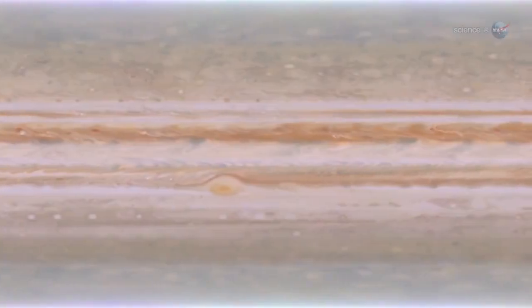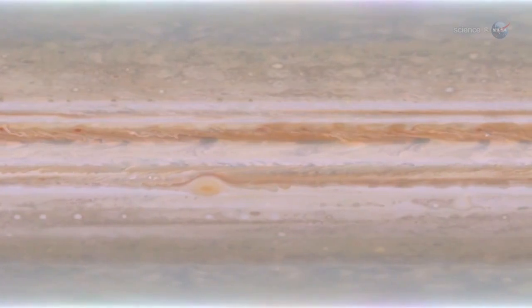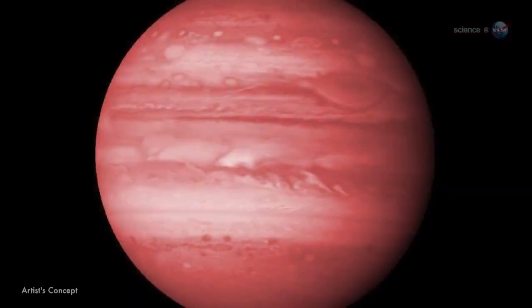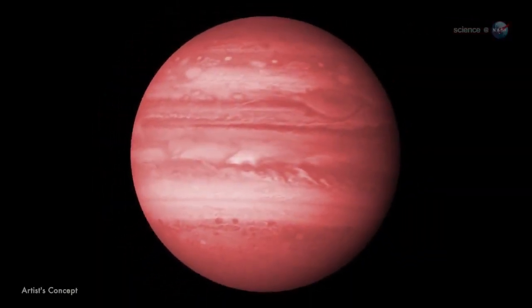Over the years, planetary scientists have developed computer models to reproduce the storms and cloud belts in Jupiter's atmosphere. If you take those models and turn up the heat, weather patterns become supersized. For instance, on a hot Jupiter, the great red spot might grow as large as a quarter the size of the planet, and manifest itself in both the northern and southern hemispheres.